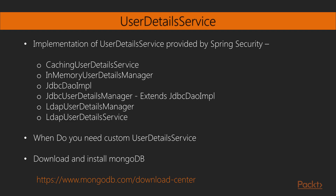How many types of UserDetailsService implementation does Spring Security provide? One is CachingUserDetailsService, InMemoryUserDetailsManager, JdbcDaoImpl, JdbcUserDetailsManager which extends JdbcDaoImpl, LdapUserDetailsManager, and LdapUserDetailsService. If it's a manager, it has additional functionality like create, update, and delete users. If it's a service, it has methods to search for a user and returns a UserDetails object.